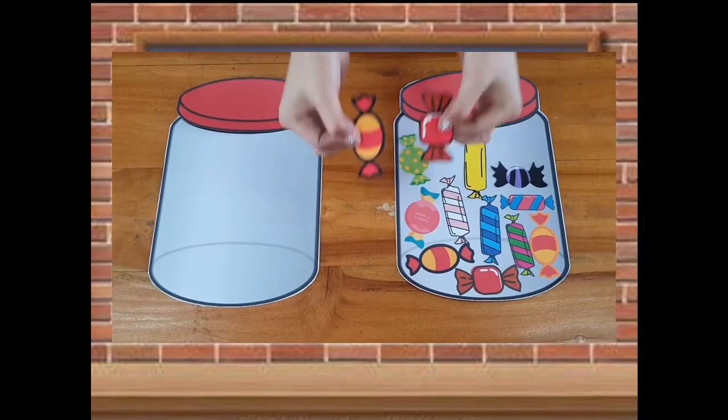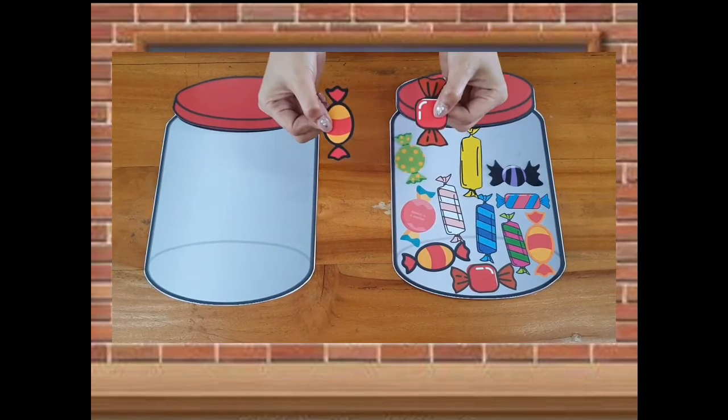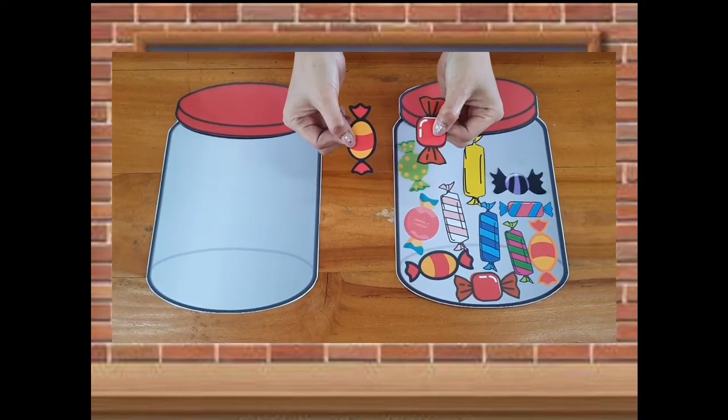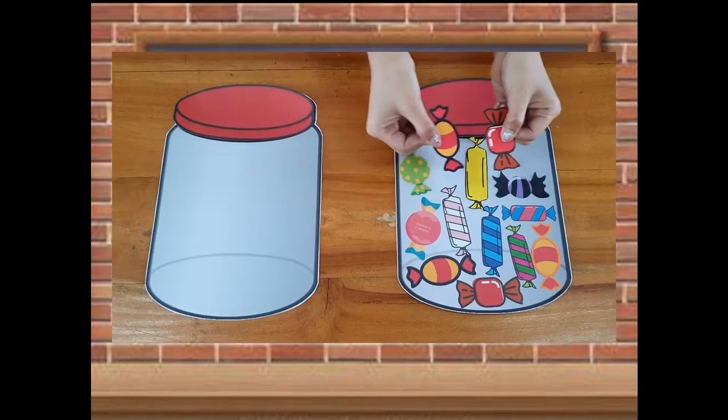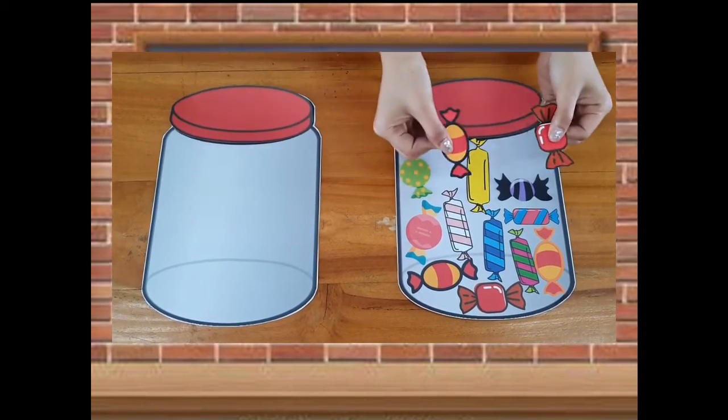Now I have two candies extra and I want these candies to fill a container, meaning I want it full. So, where should I put these two candies? Should I put it here? Over here?